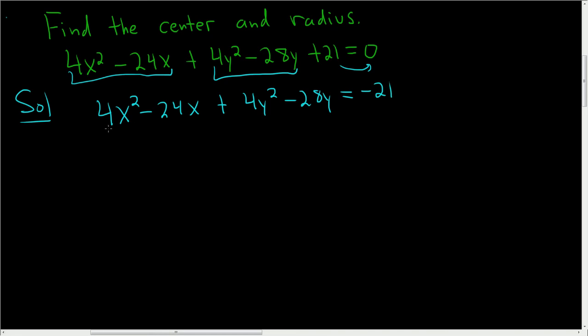Now we'll factor out a 4 from here and factor out a 4 from here. So we get 4(x² - 6x), because 4 times -6 is -24, so it checks, plus 4(y² - 7y), and that checks, because 4 times -7 is -28. And over here we still have the -21.